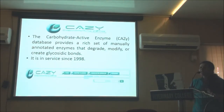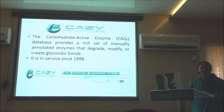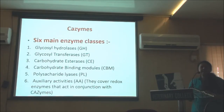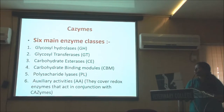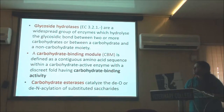CAZy — written as CAZy, carbohydrate active enzyme — is a database that provides a rich set of manually annotated enzymes that degrade, modify, or create glycosidic bonds. It has been in service since 1998. In CAZy there are six main classes. Unlike traditional enzyme classification which differentiates based on function, CAZy differentiates enzymes based on mode of action. The six classes are: glycosyl hydrolases (GH), glycosyl transferases (GT), carbohydrate esterases (CE), carbohydrate binding modules (CBM), polysaccharide lyases (PL), and auxiliary activities (AA) — which cover redox enzymes that act in conjunction with CAZymes.